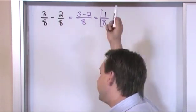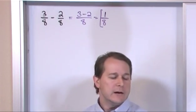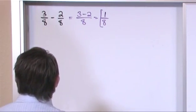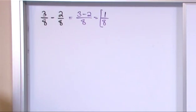3 minus 2 is 1. You could just write down 1/8 because this problem is so simple. But notice that it is very similar to addition because really you're checking the denominator first and then you're doing the actual step.